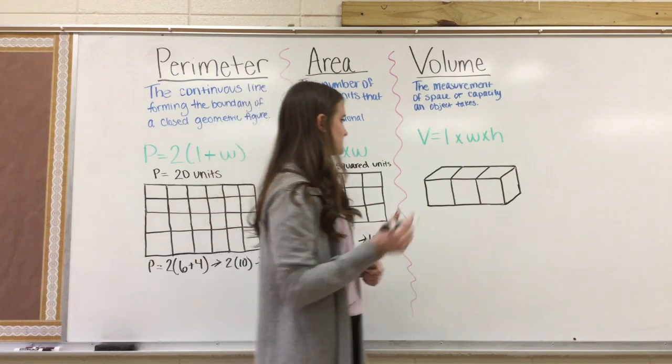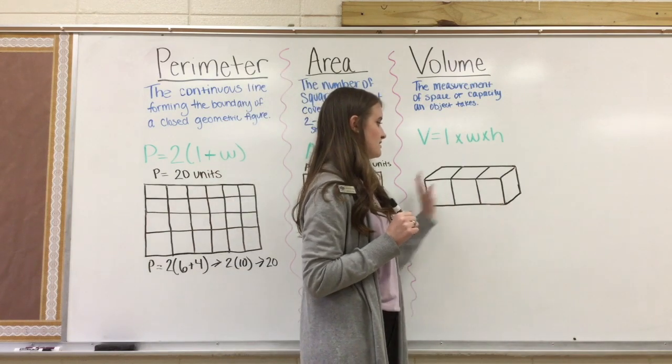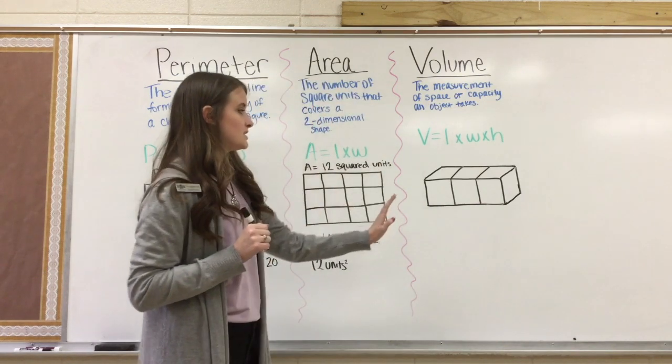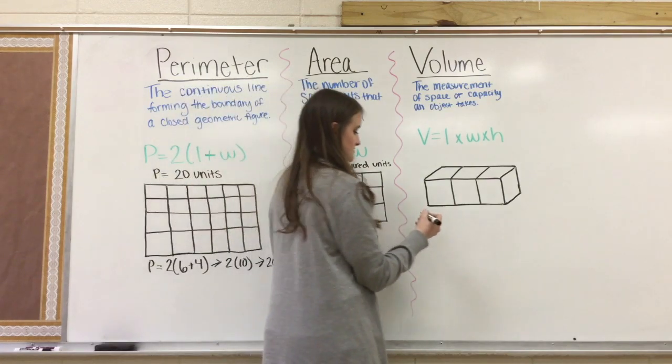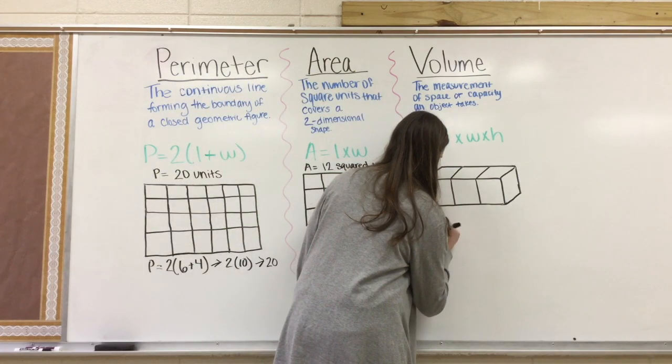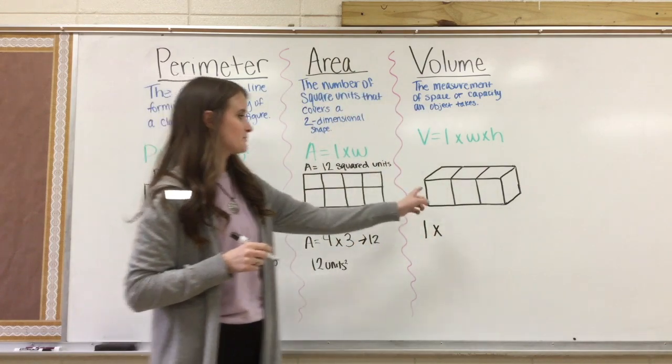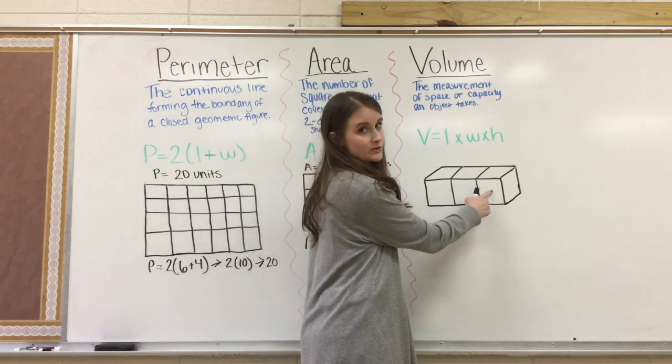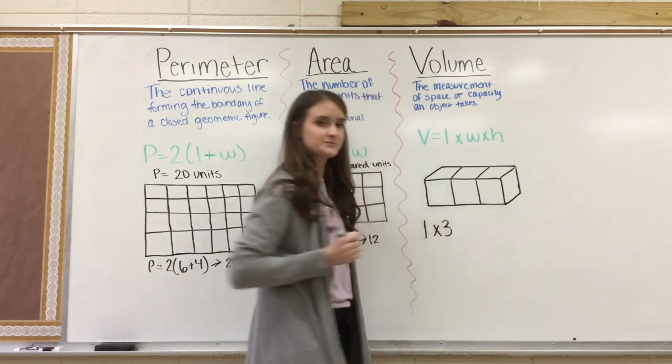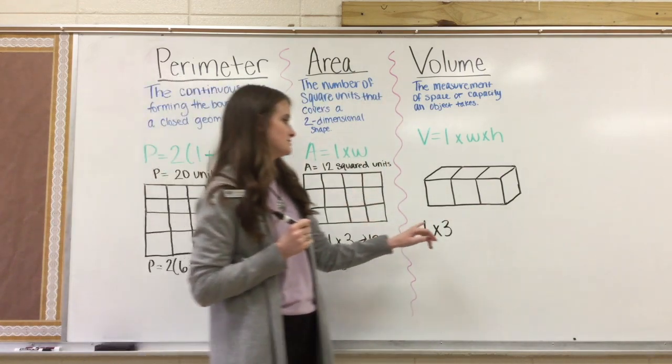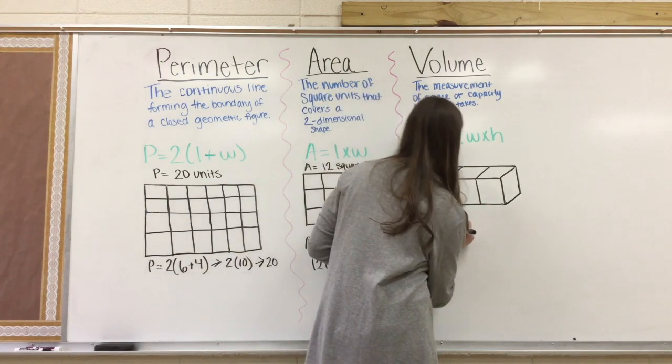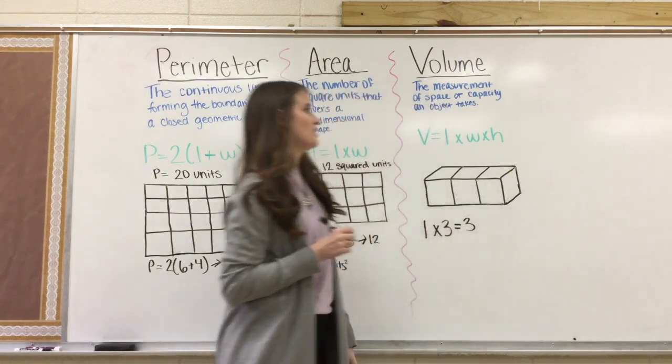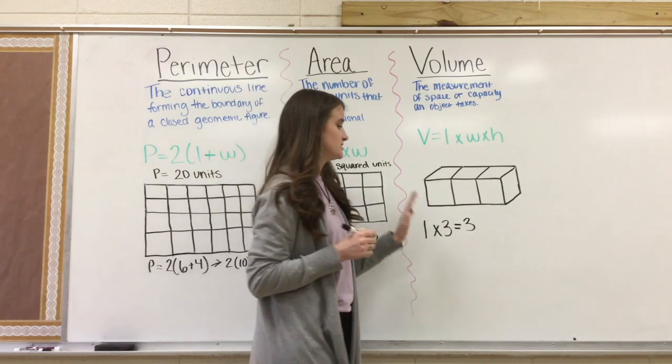So first, we're going to look at how many layers there are, which layers can be vertical or horizontal. And there's only one layer, so we will write 1 multiplied by. Then we will count how many are in this layer, which is 1, 2, 3. So we will write 3. Now we will multiply 1 times 3. 1 times 3 equals 3. So the volume for this shape is 3 cubic units.